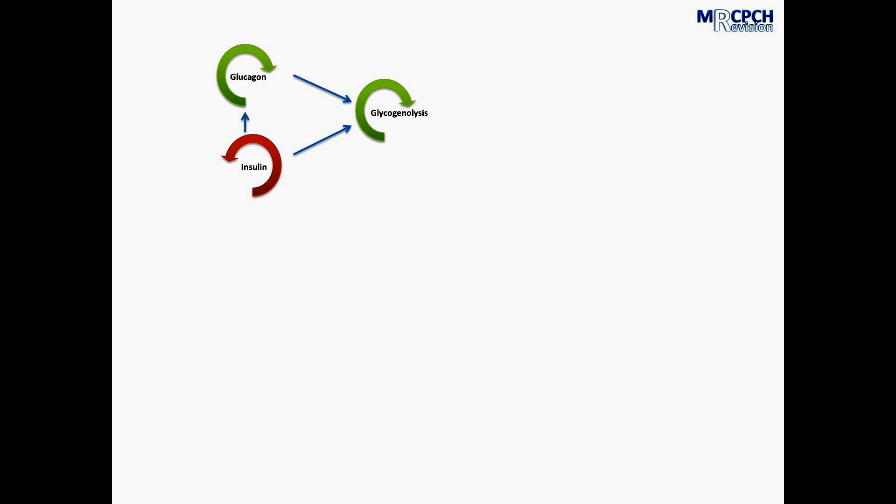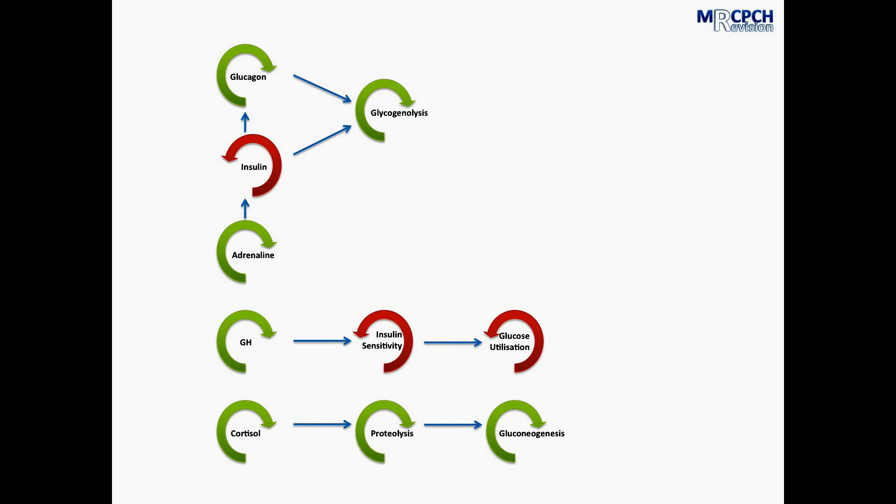Now early on we saw our unhappy cell and our unhappy cell triggers the release of stress hormones, namely adrenaline, growth hormone, and cortisol. Adrenaline further reduces the secretion of insulin, exacerbating the glycogenolysis. Cortisol increases the rate of proteolysis, the products of which enter gluconeogenesis. Growth hormone reduces insulin sensitivity and therefore reduces glucose utilisation.